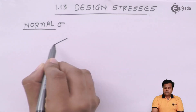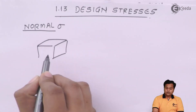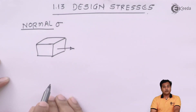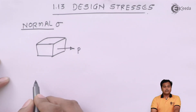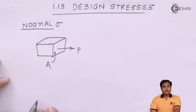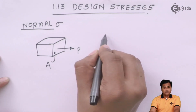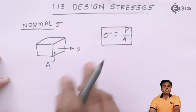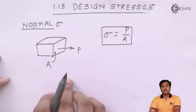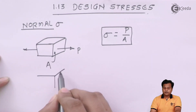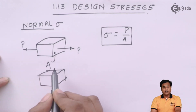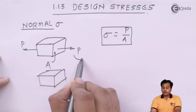Whenever there is a cross section and a force acts normal to it — let us say the cross section area is A — the stress sigma equals P upon A. All such stresses are called normal stresses because the force acting is normal to the area of cross section. Now there are two possibilities. In one case we see two pull forces acting on the body, and in that case the stress induced is called tensile stress.